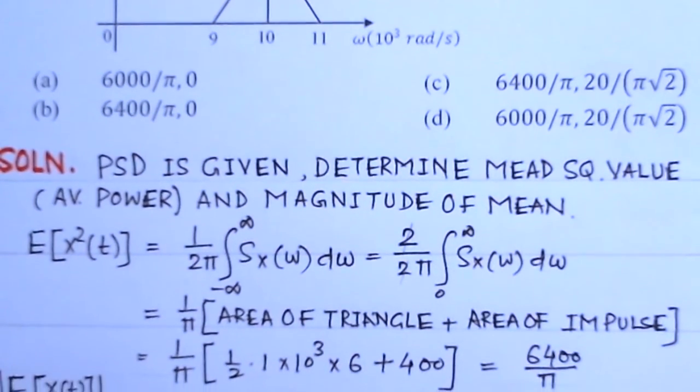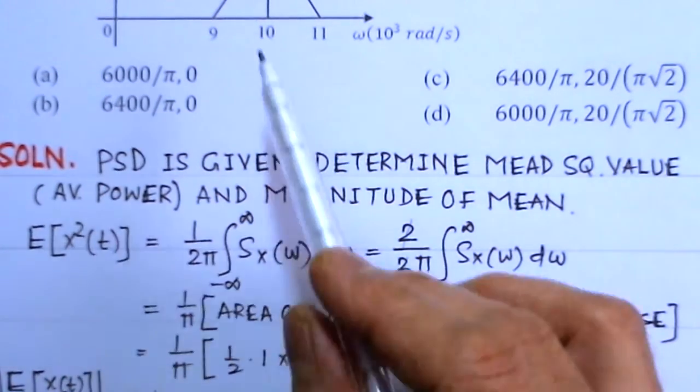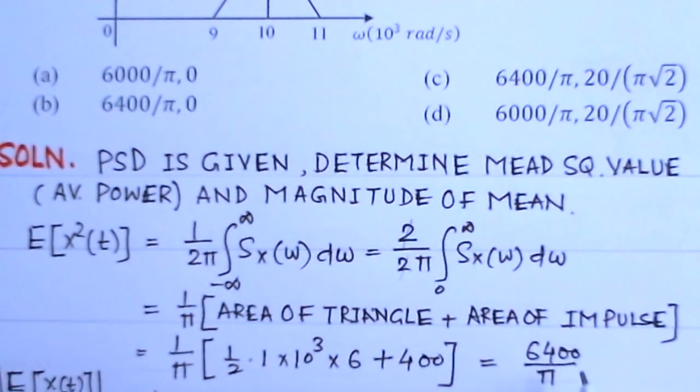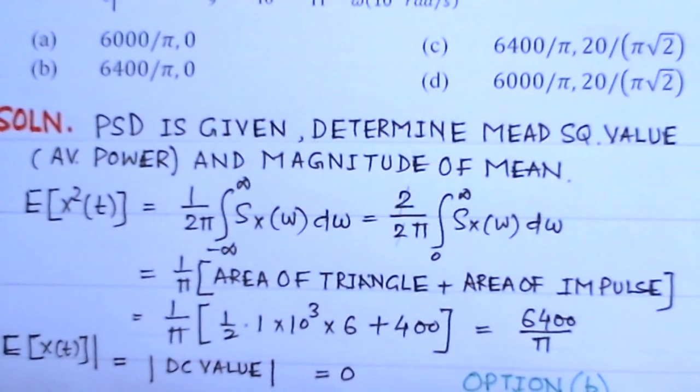Now S_X(ω) dω is basically the area under this triangle. It will consist of the area under this triangle plus the area of the impulse.